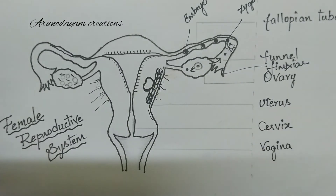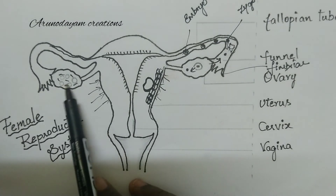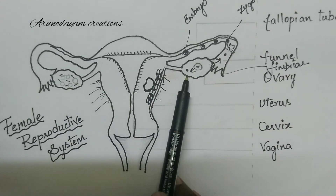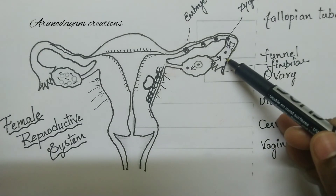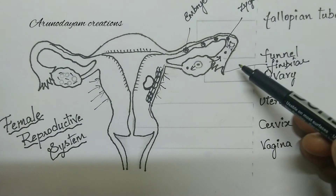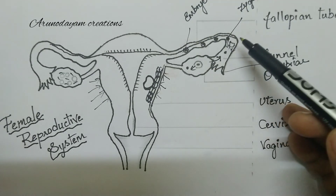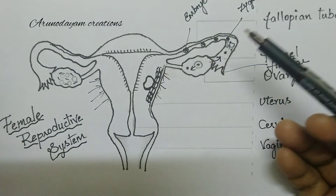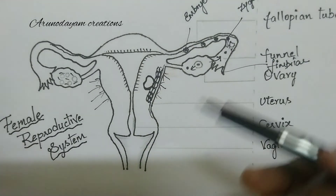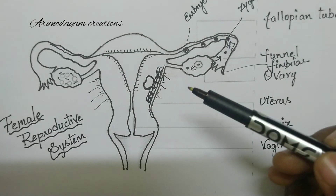Baby development will be covered in the next video. So in summary: the female reproductive system has a pair of ovaries where ova are produced, a pair of tube-like structures called fallopian tubes where fertilization takes place, and development of the zygote and embryo also takes place in the fallopian tube. Development of the baby takes place in the uterus, and through the cervix and vagina, after completion of baby development, childbirth takes place.